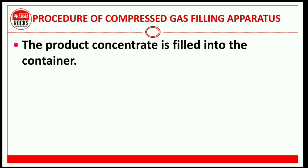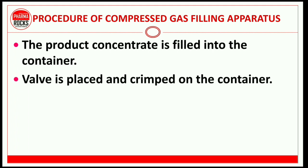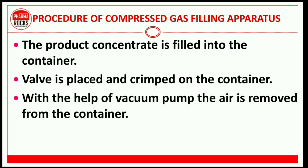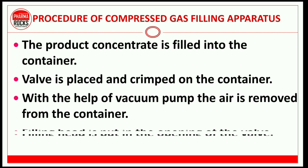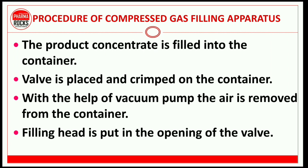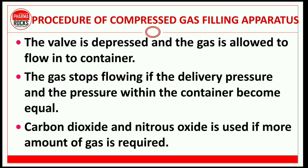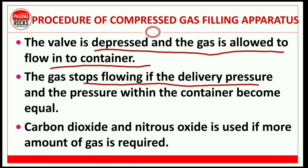Procedure of compressed gas filling apparatus: First, the product concentrate is filled into the container. Next, the valve is placed and crimped on the container. With the help of a vacuum pump, the air is removed from the container. The filling head is put into the opening of the valve, the valve is depressed, and the gas is allowed to flow into the container.